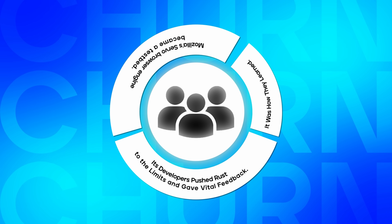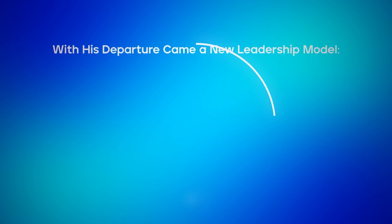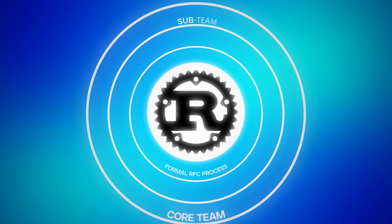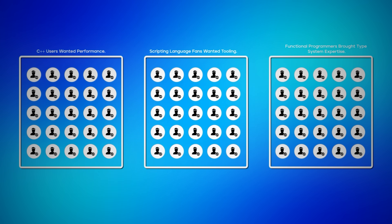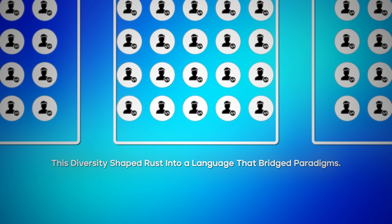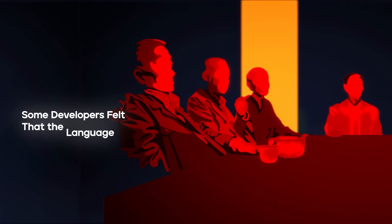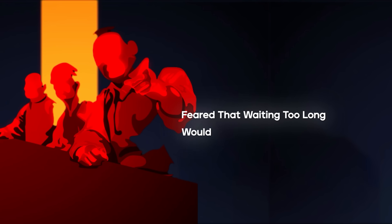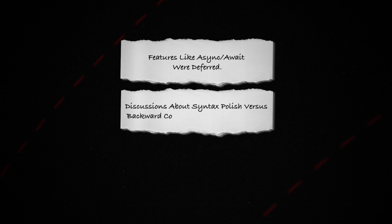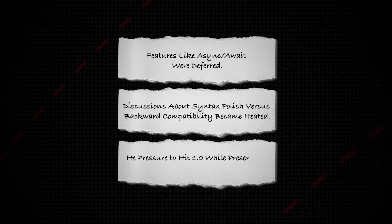In 2013, Hoare stepped down, and with his departure came a new leadership model: a core team, sub-teams, and a formal RFC process. Rust's governance became collaborative and open. Developers from many backgrounds joined — C++ users wanted performance, scripting language fans wanted tooling, functional programmers brought type system expertise. This diversity shaped Rust into a language that bridged paradigms. As the team approached version 1.0, tensions rose over readiness versus adoption risk. Features like async/await were deferred, and discussions about syntax polish versus backward compatibility became heated. The pressure to hit 1.0 while preserving Rust's integrity forced hard decisions that shaped the language's future.